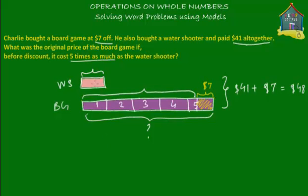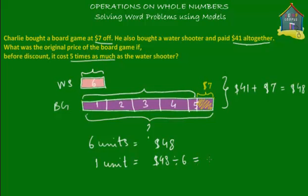We have six units in total: five units of the board game and one unit of the water shooter. So six units equal $48. If six units equal $48, then one unit is $48 divided by 6, which equals $8. So the water shooter cost $8.